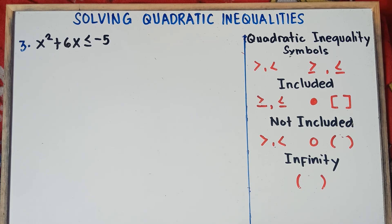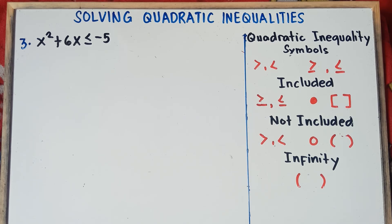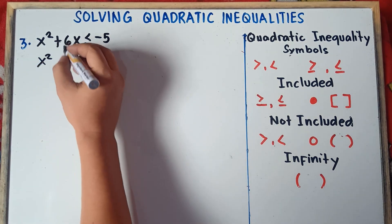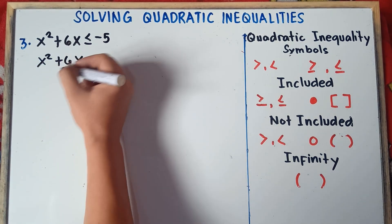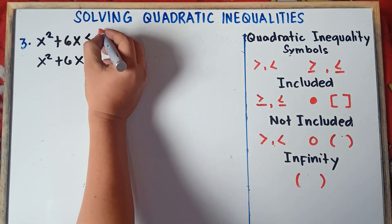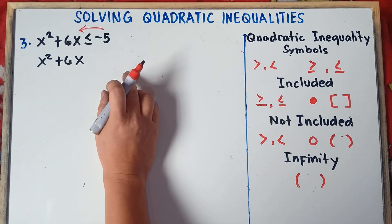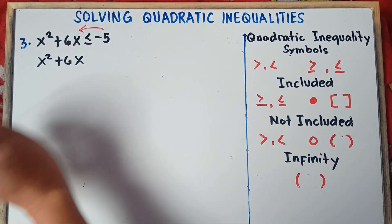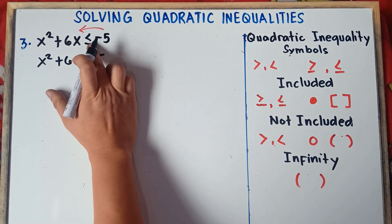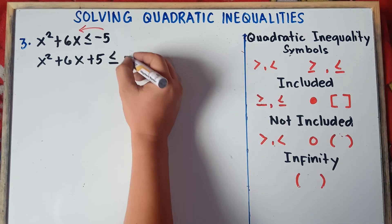Let's start answering number 3. First, check the quadratic inequality to see if it's arranged. It's not arranged, so we need to arrange it. Copy x squared and then plus 6x. Transpose negative 5 from right to left — once you transfer, you change the sign, so negative 5 becomes positive 5. Copy the inequality symbol less than or equal, then zero.